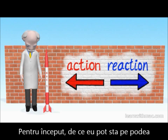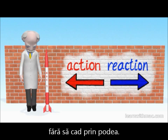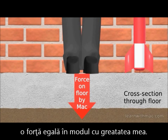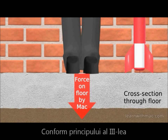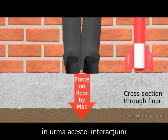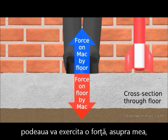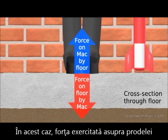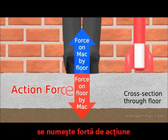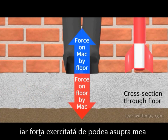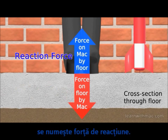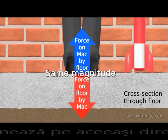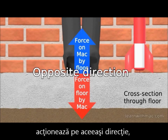First of all, the ability for us to stand on a floor without falling through it. While I'm standing here, I'm applying a force to the floor as a result of my weight. Newton's third law says that as a result of this interaction, the floor will apply an equal force on me in the opposite direction. In this case, we refer to the floor as the action force and the force applied to me from the floor as the reaction force. The action and reaction forces are precisely the same magnitude but in the opposite direction to each other.